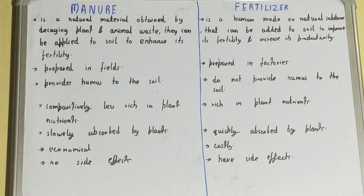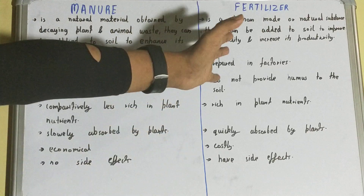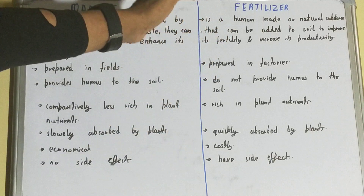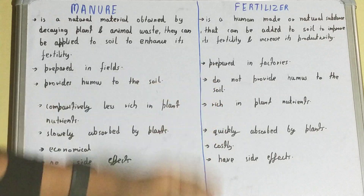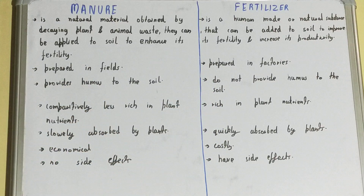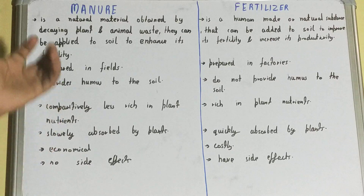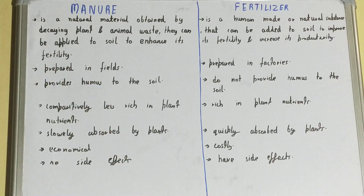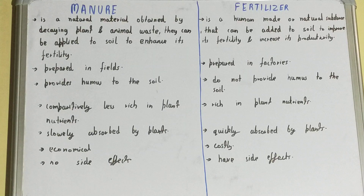Fertilizer is helpful in plant growth much more than manure, but fertilizer is not eco-friendly. Manure is more eco-friendly — though it takes time to work, it is environmentally friendly.